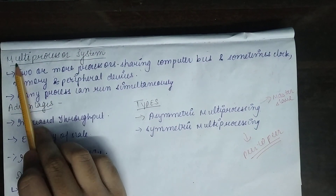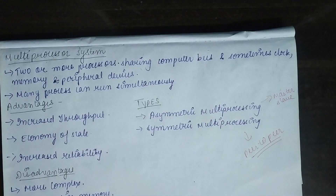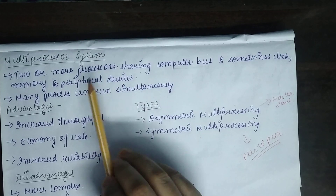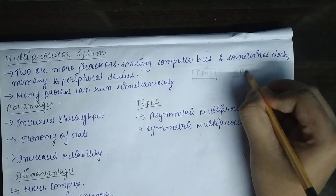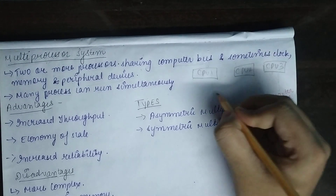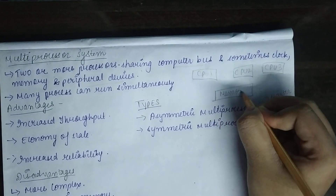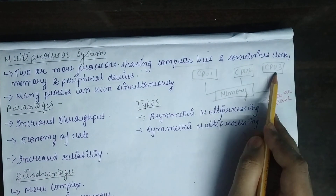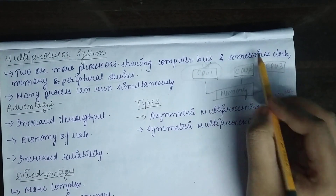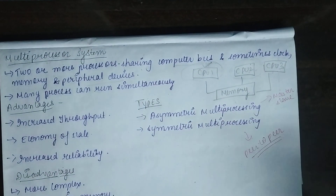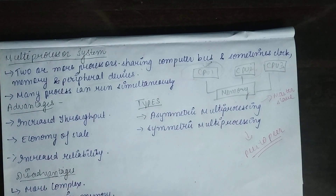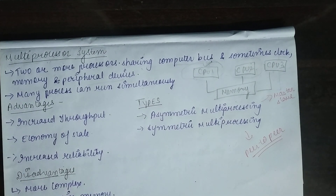A multi-processor system means you have multiple processors — two or more — in a system. They share the computer bus and peripheral devices. Since there are multiple processors, such as CPU 1, CPU 2, and CPU 3, they share memory. This allows you to run multiple processes simultaneously, which is the key benefit of a multi-processor system.